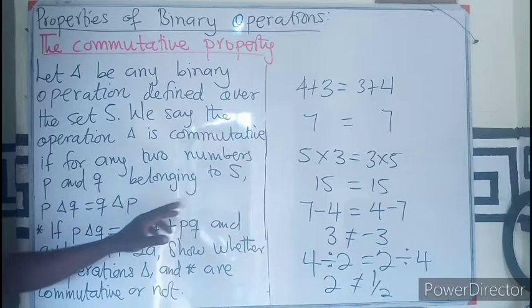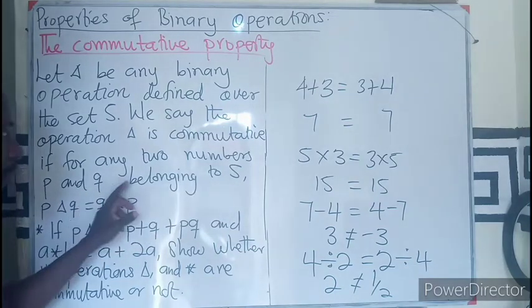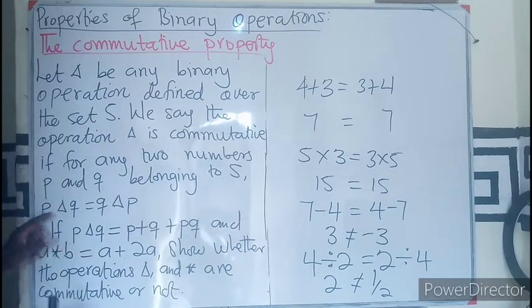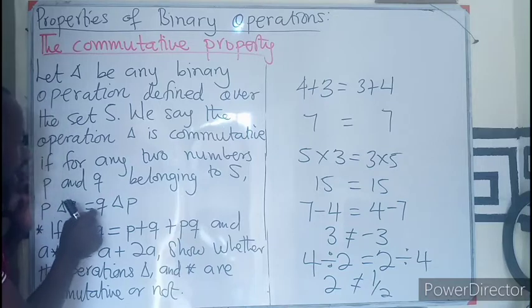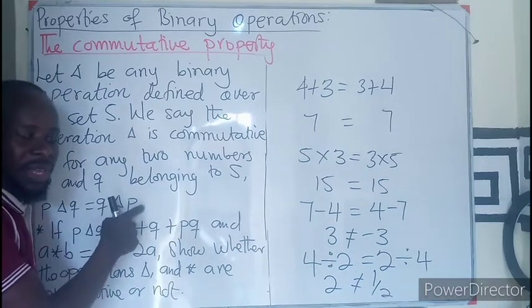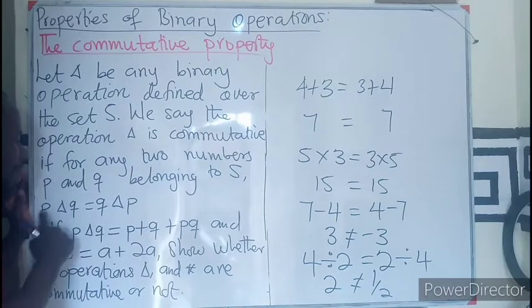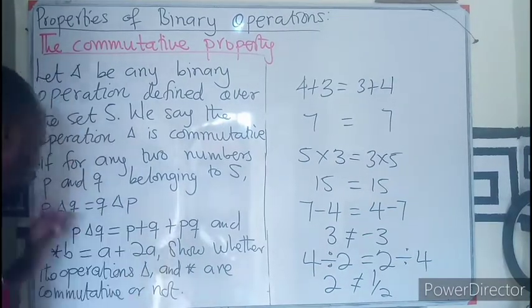We say the operation Δ is commutative if for any two numbers selected from the set, that is P and Q belonging to the set, P Δ Q, the result will be the same as when Q is operated on by P. That is, the operation remains the same but the order of the numbers changes.